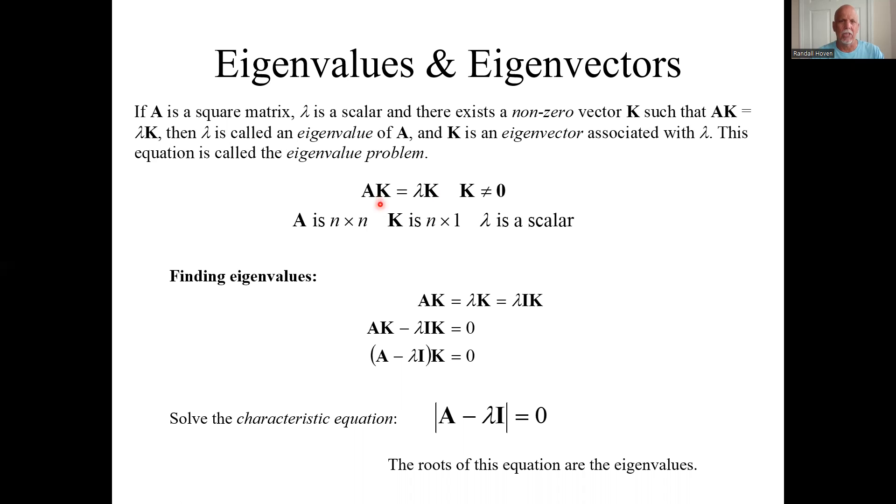You can see if I just set K equal to a zero vector - and K by the way, if A is n by n, K is n by 1, so like a column matrix or column vector, and lambda is just a number.